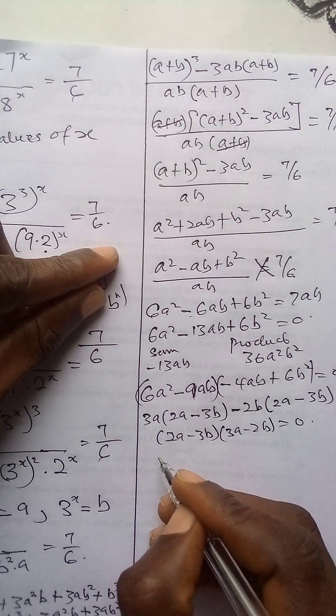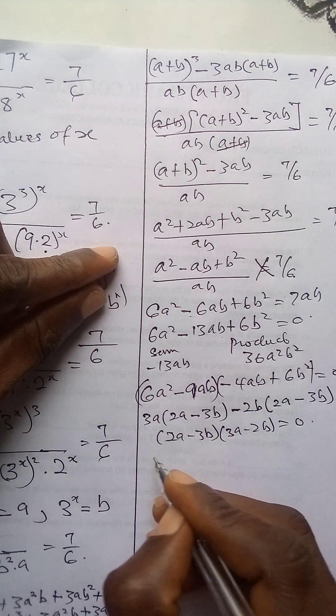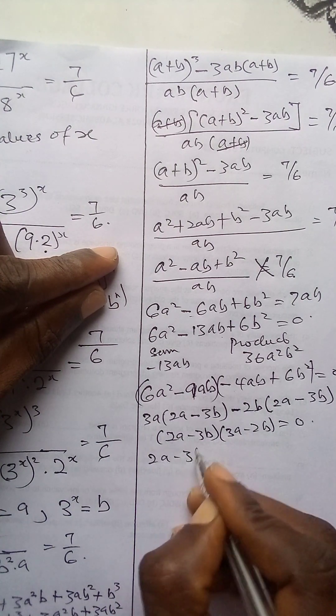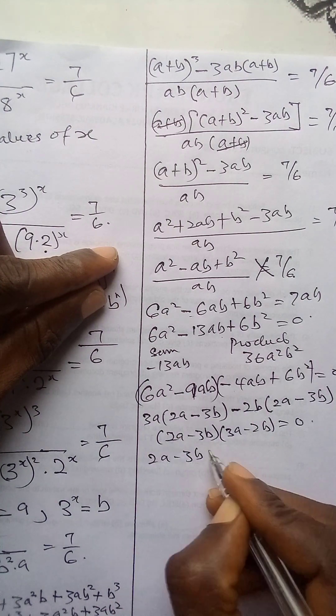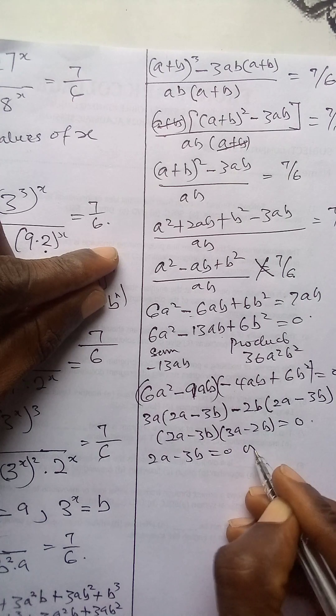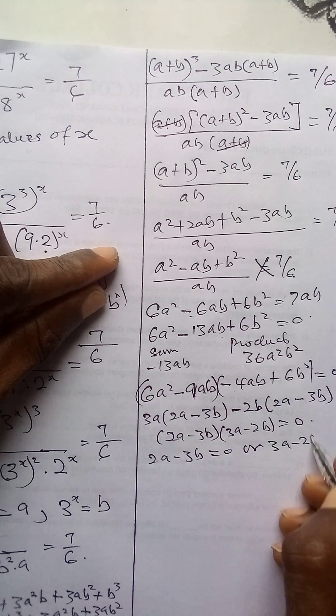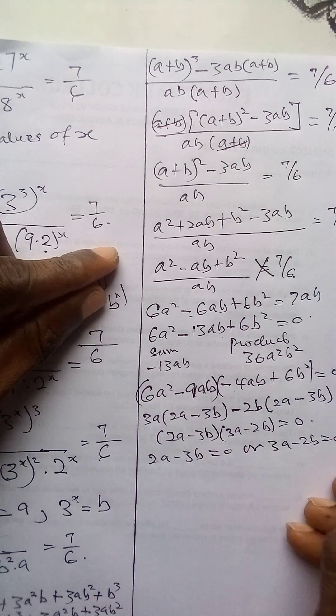Equating each bracket to zero: either 2a minus 3b equals 0, or 3a minus 2b equals 0.